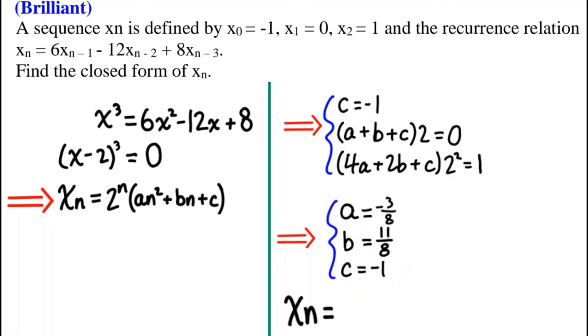So by putting all these into this equation over here, we get that xn equals 11 divided by 8 times n minus 3 divided by 8n minus 1 times 2 to the n power. And there you go, that's the answer to our first example.